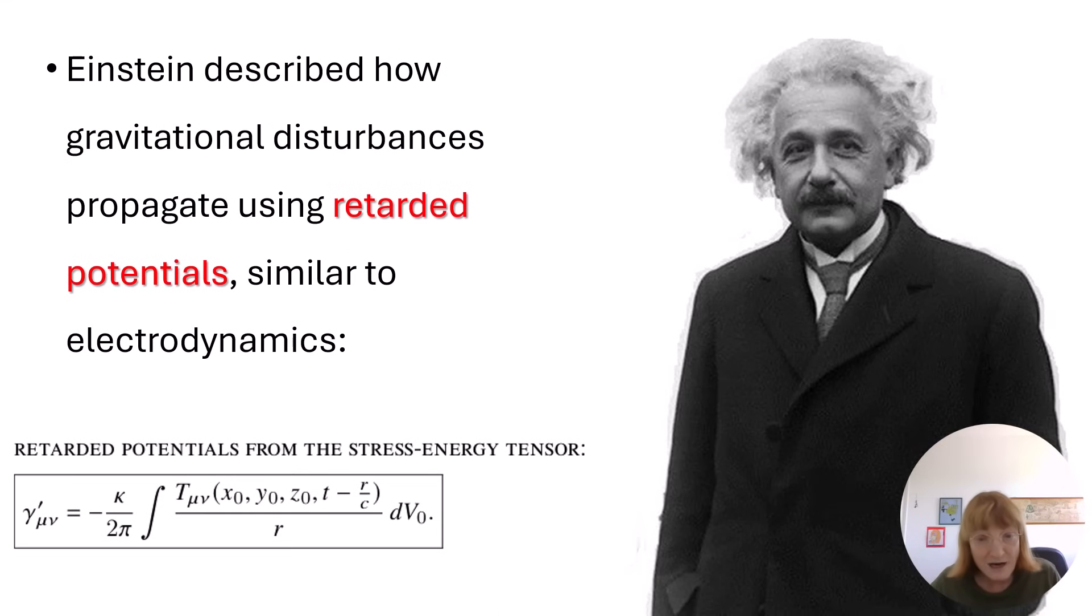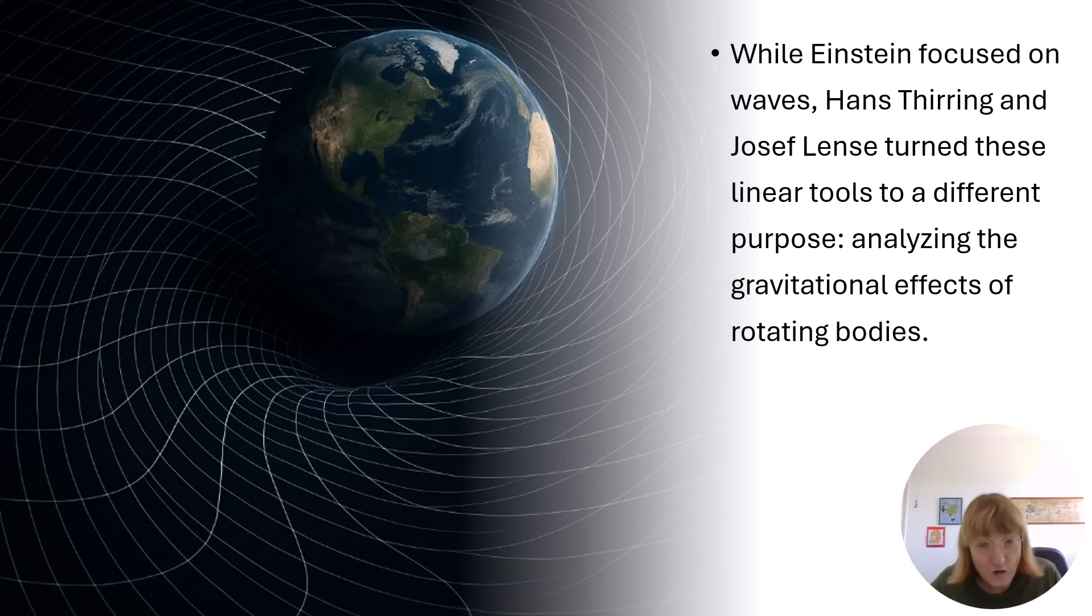Einstein described how gravitational disturbances propagate using retarded potentials, similar to electrodynamics. While Einstein focused on waves, Hans Thirring and Josef Lense turned these linear tools to a different purpose, analyzing the gravitational effects of rotating bodies.